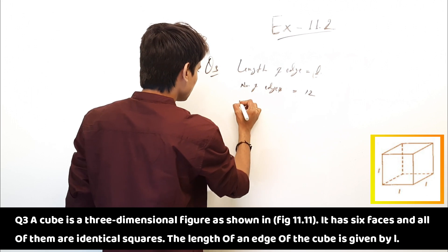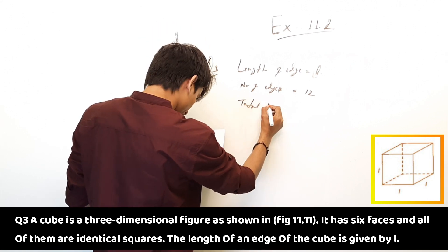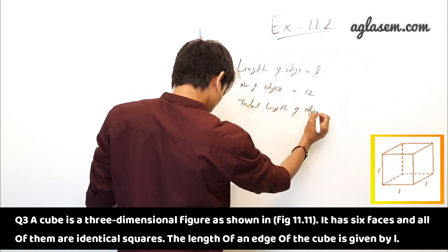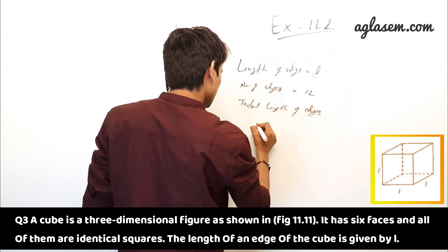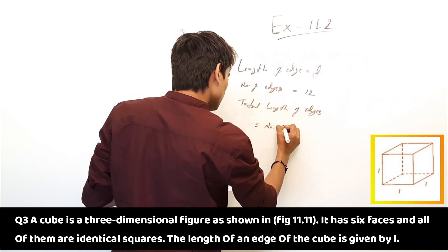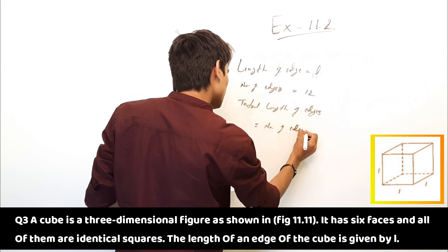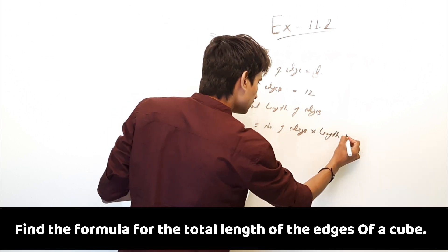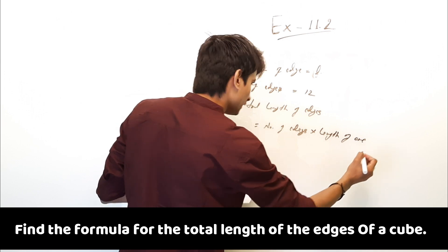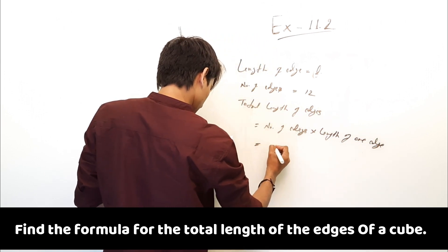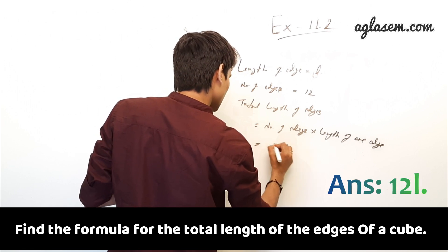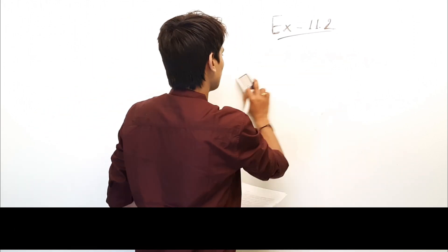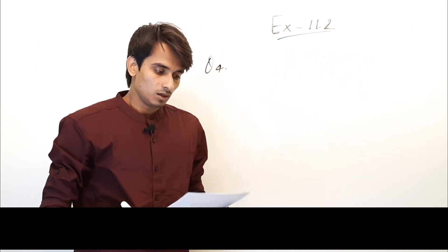Total length of the edges of a cube equals number of edges multiplied by length of one edge. So the answer is 12L. This is the final answer, 12L.